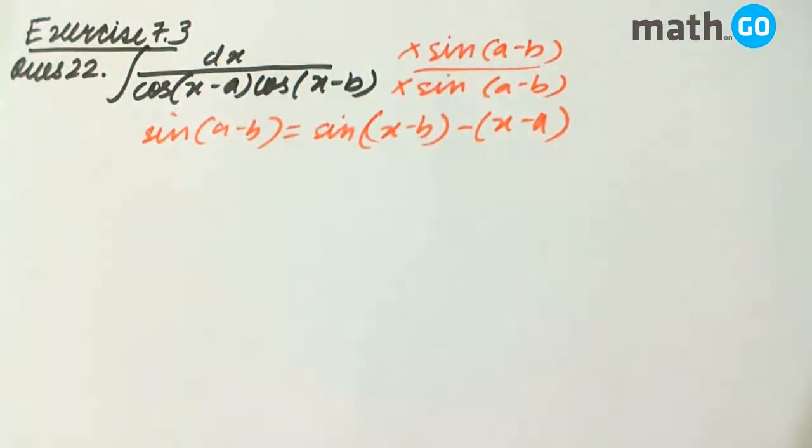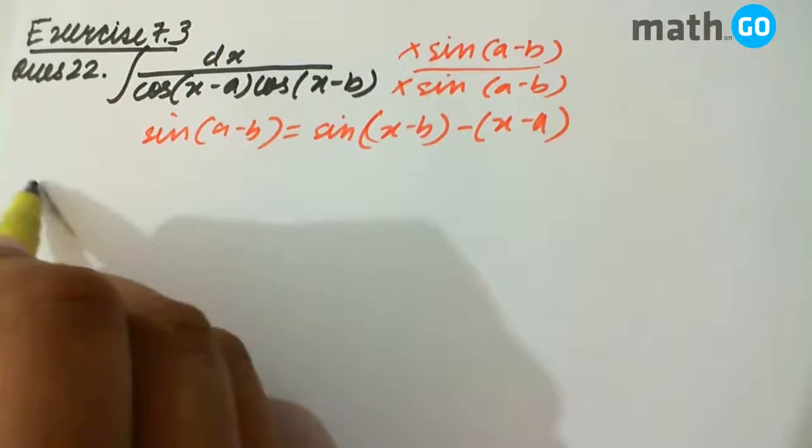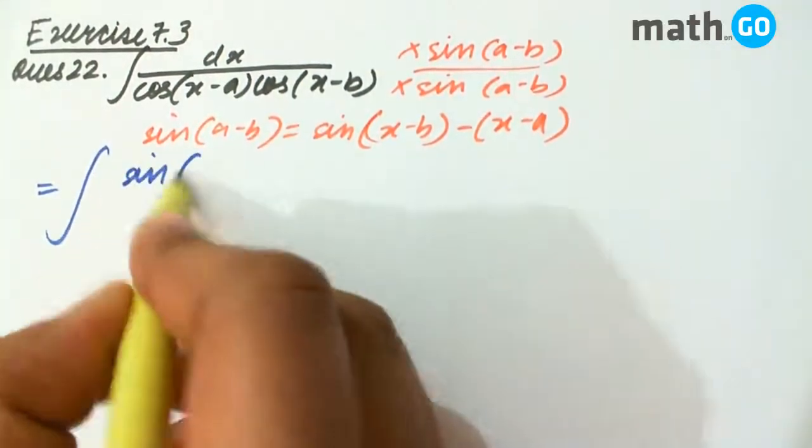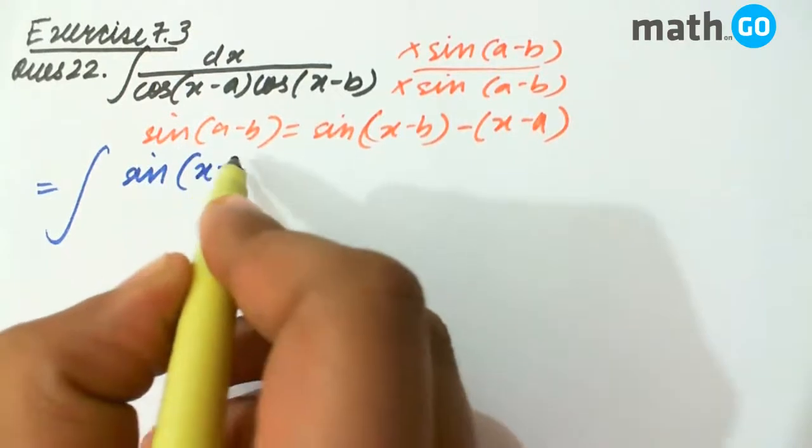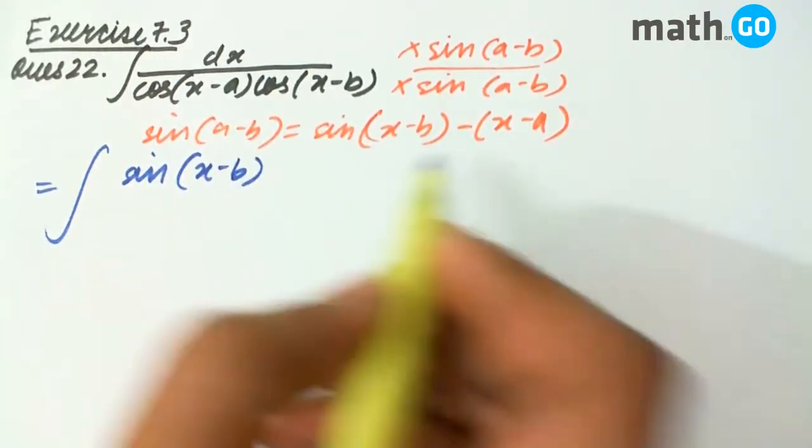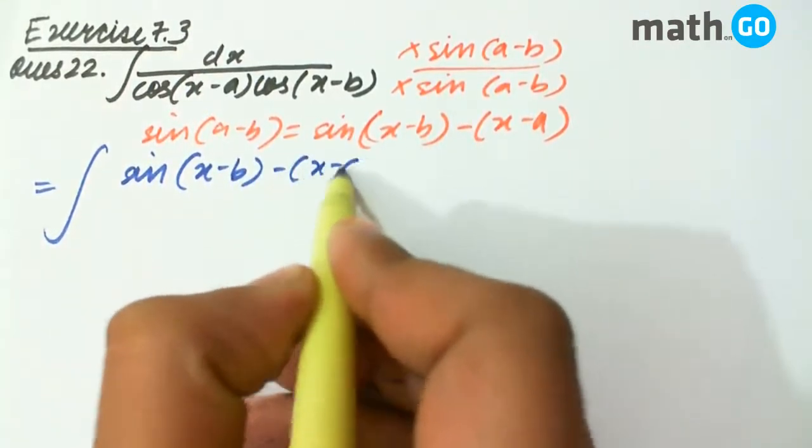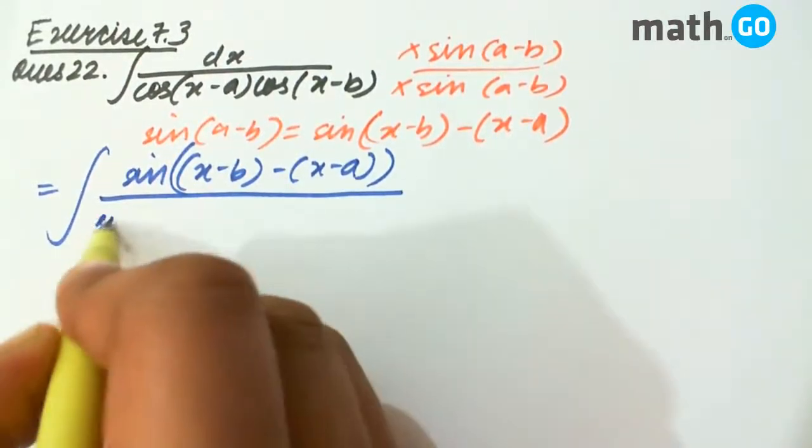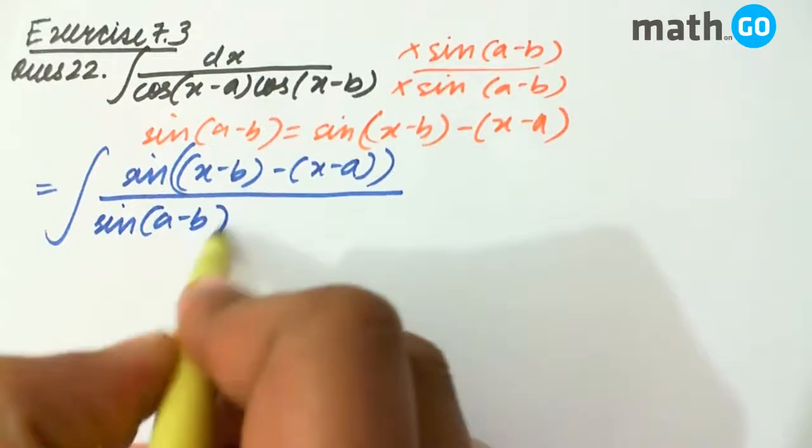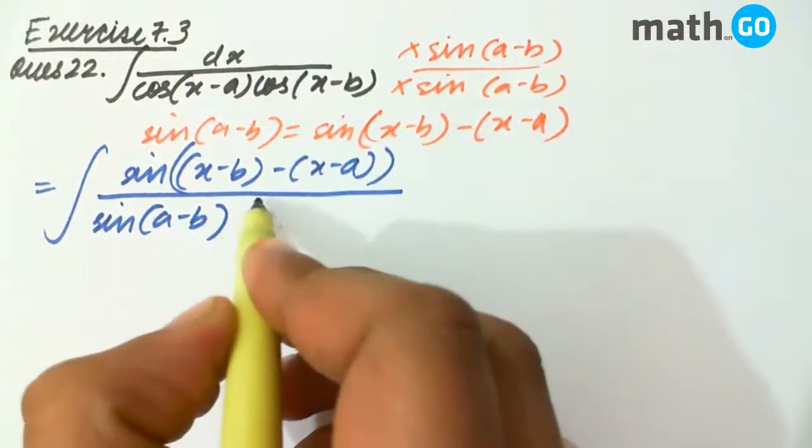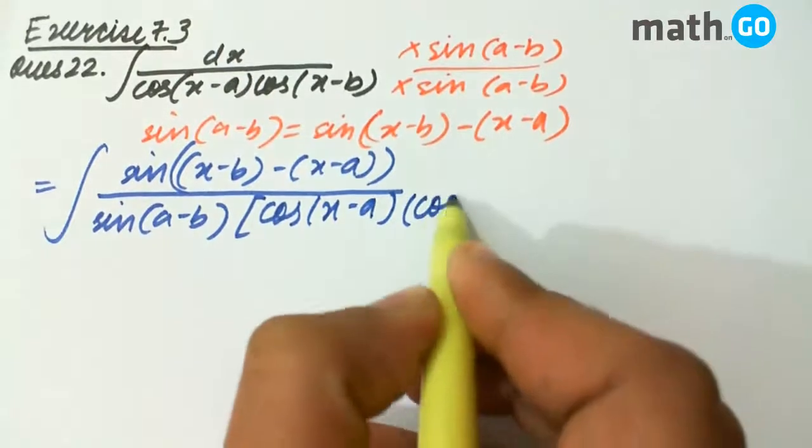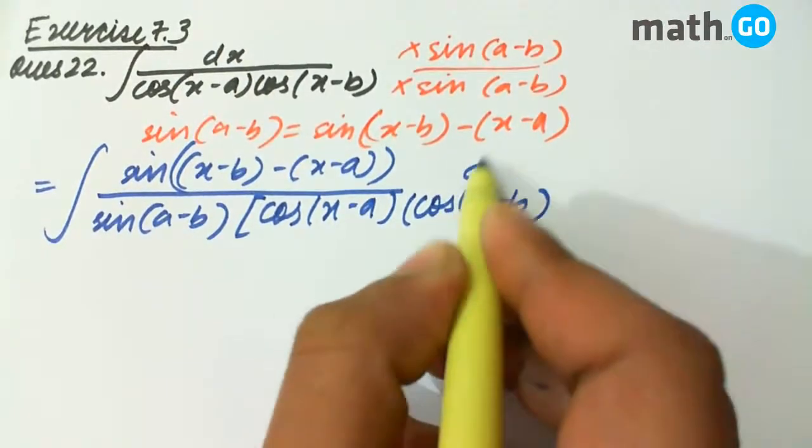So how does it work? Let us see. Here this becomes sin(x-b) minus sin(x-a) upon sin(a-b). We multiply the denominator by cos(x-a) into cos(x-b) dx.